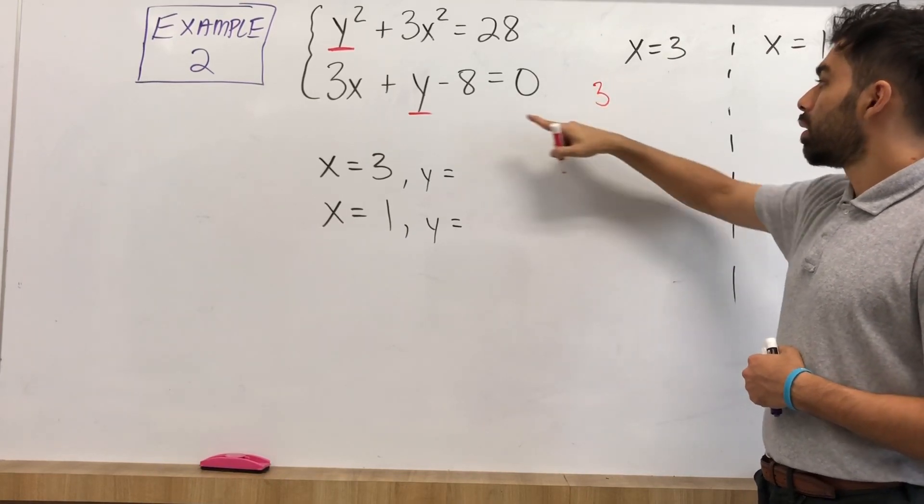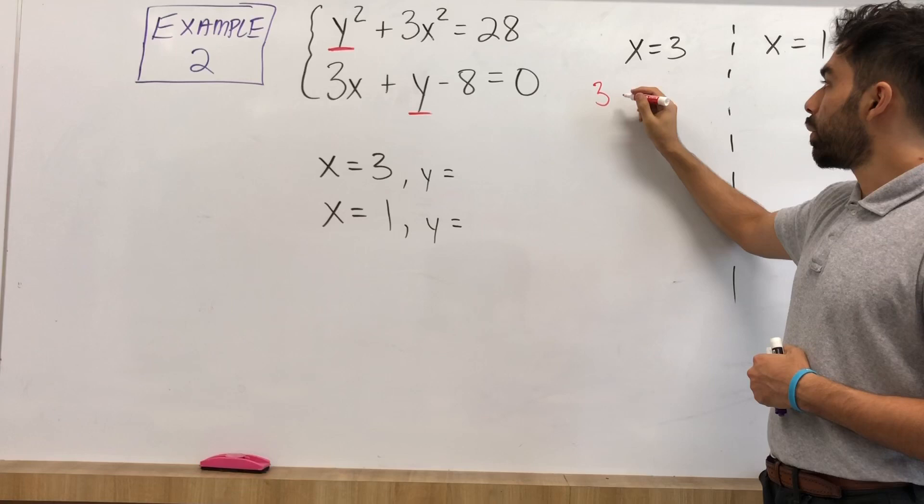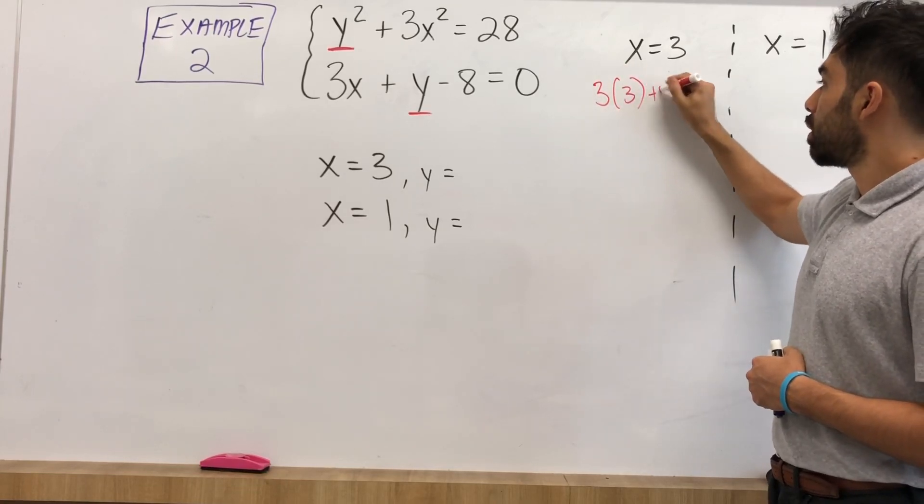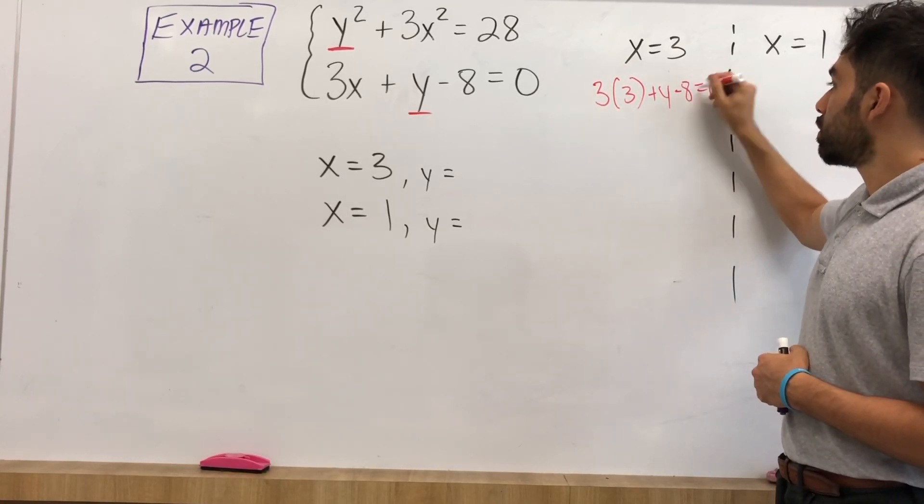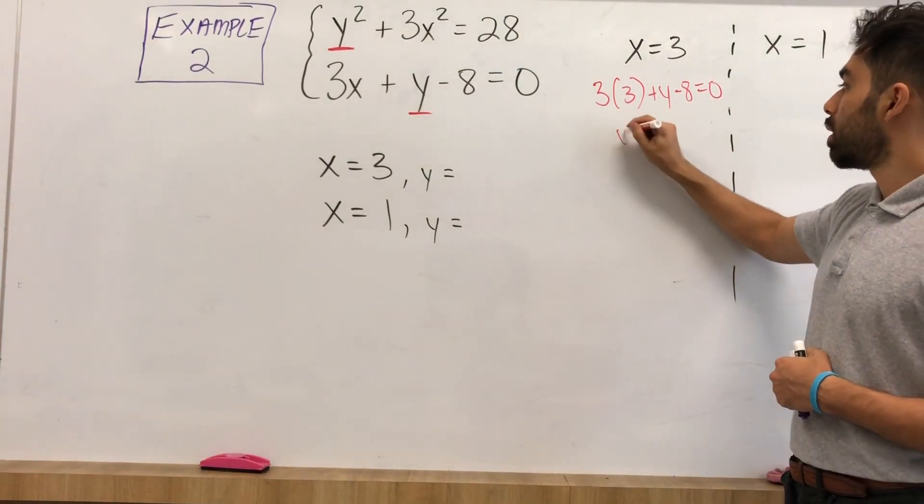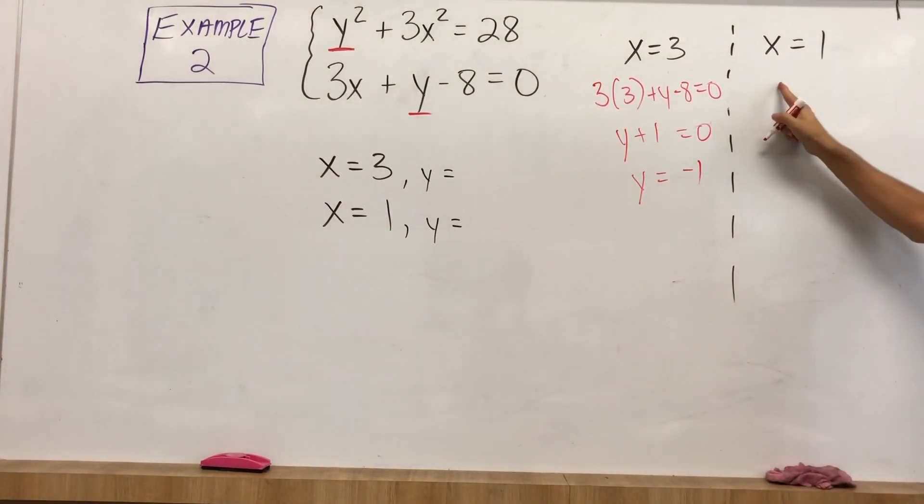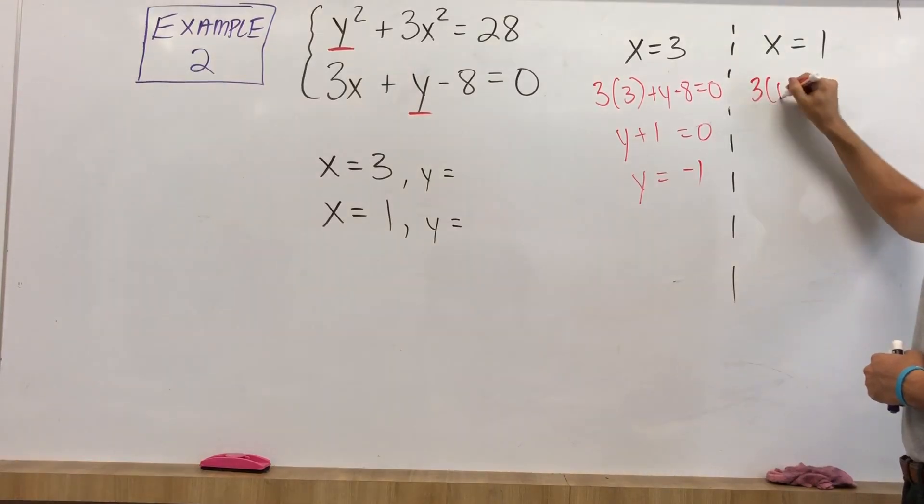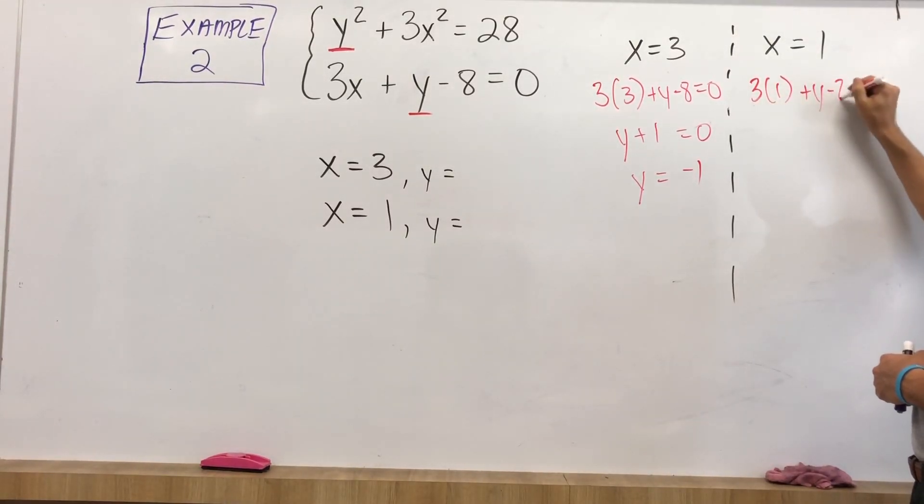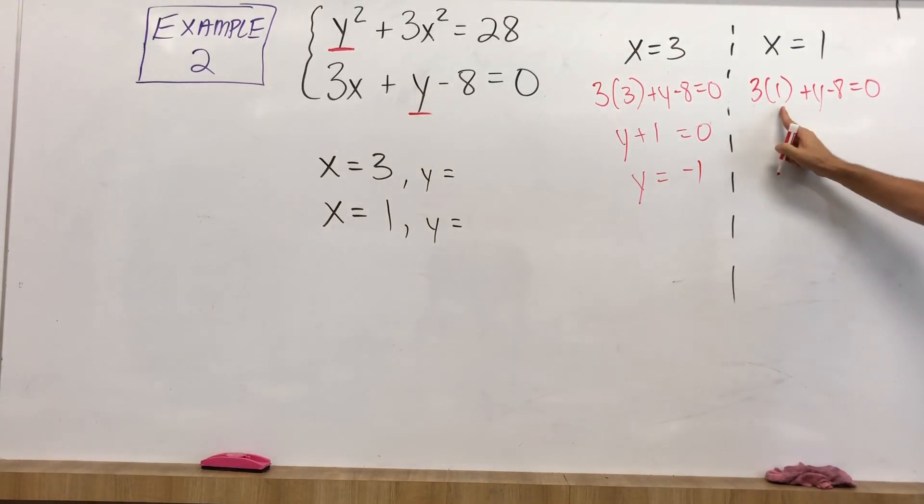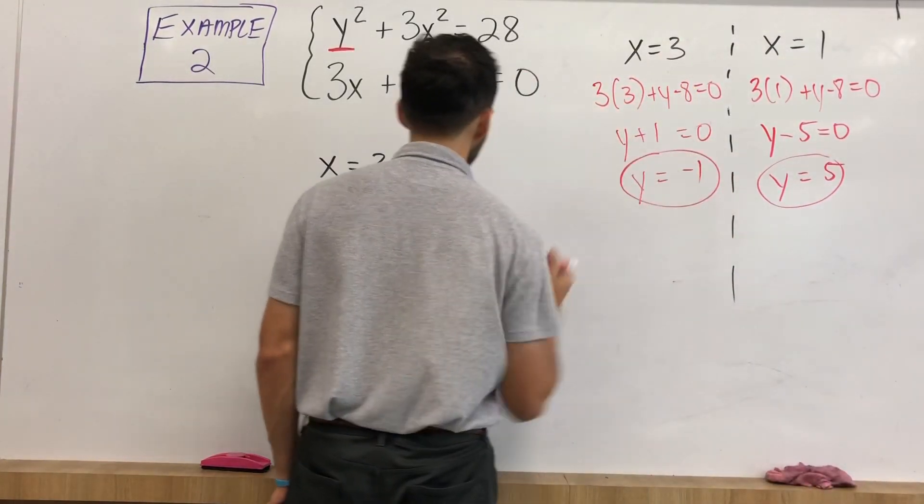So we have our values for x and both our x values. Let's go ahead and plug it in. And when we plug it in, let's use the easier equation so we can find y much more easily. So I end up having, let's plug it into our linear equation. Let's plug in 3x plus y minus 8 is equal to 0. 3 times 3 is 9. 9 minus 8. I have y plus 1 equal to 0. y ends up being a negative 1. Right up here I have x is 1. So that's what I'm substituting in. 3 times 1 is 3. 3 minus 8 is negative 5. So y minus 5 is equal to 0. y ends up being a positive 5. So when x is 1, y is 5. And when x is 3, y is equal to negative 1.